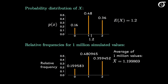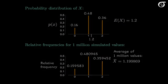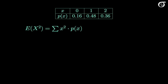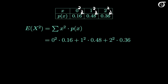Now let's work out the expectation of a function of x. Suppose we wish to find the expectation of x squared. To find that, we square each x value, multiply that by its probability of occurring, and add that up over all x. That's 0 squared times 0.16, plus 1 squared times 0.48, plus 2 squared times 0.36. Carrying out those calculations, that equals 1.92. On average, the square of x will equal 1.92.